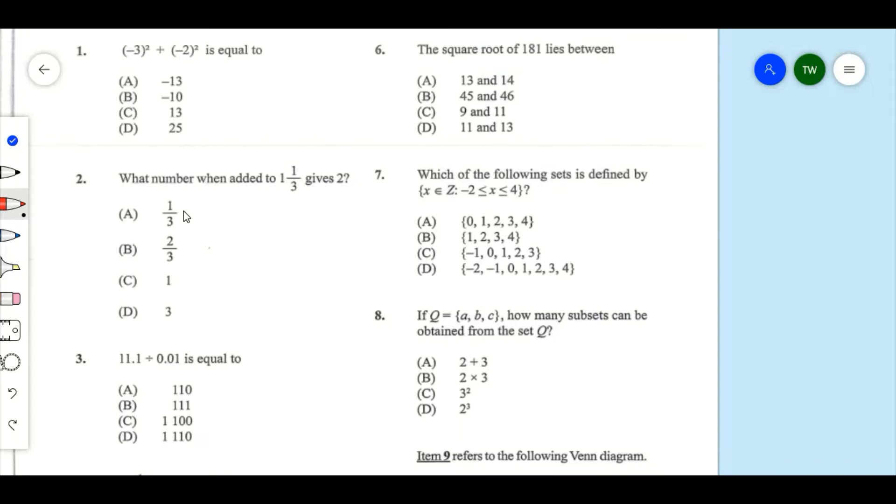Question number 1: (-3)² + (-2)² is equal to... Now, (-3)² means -3 times -3, plus (-2)² means -2 times -2. So -3 times -3 gives us positive 9, plus -2 times -2 gives us positive 4. And 9 + 4 gives us 13, so our answer for number 1 is C.